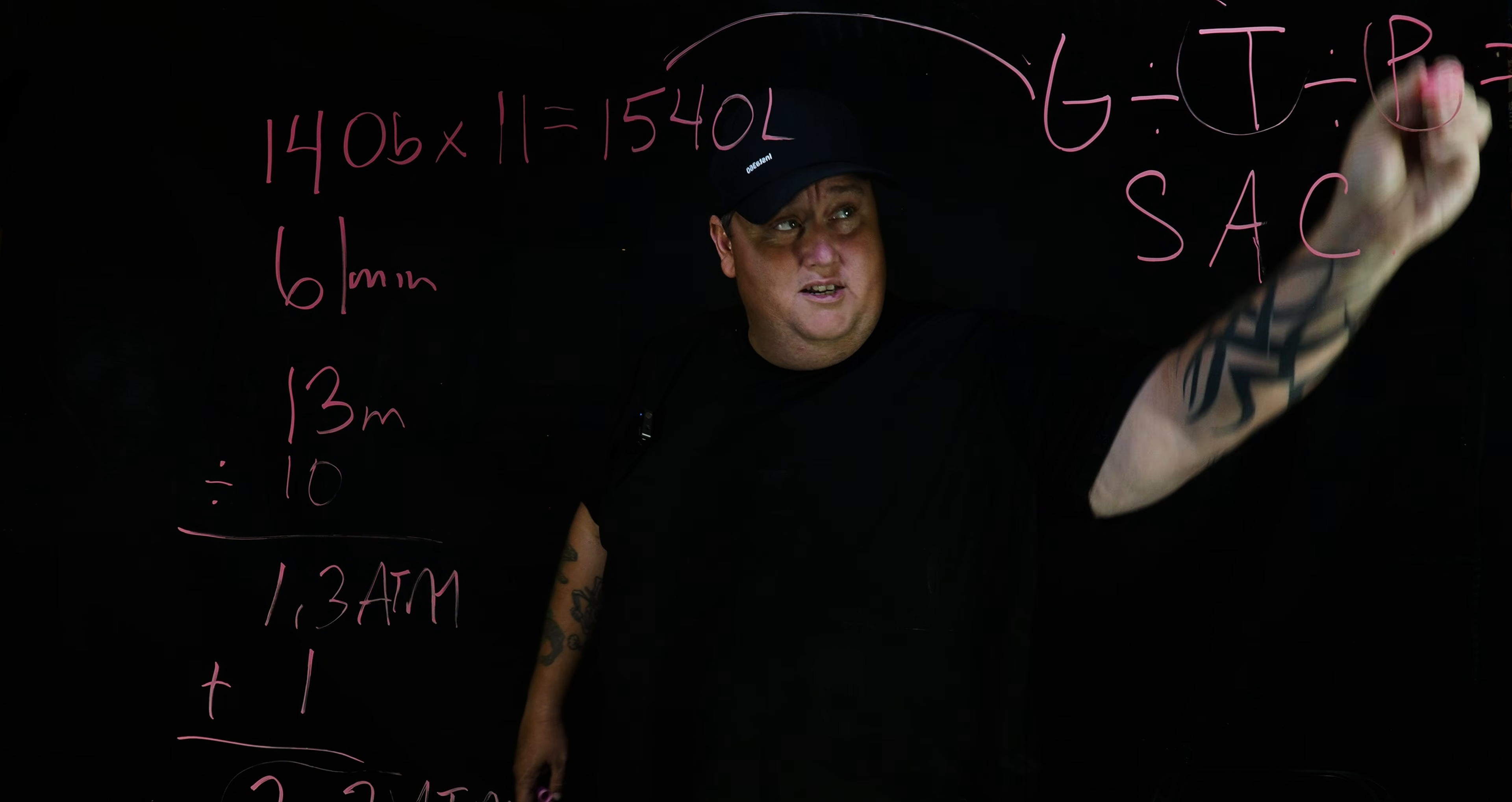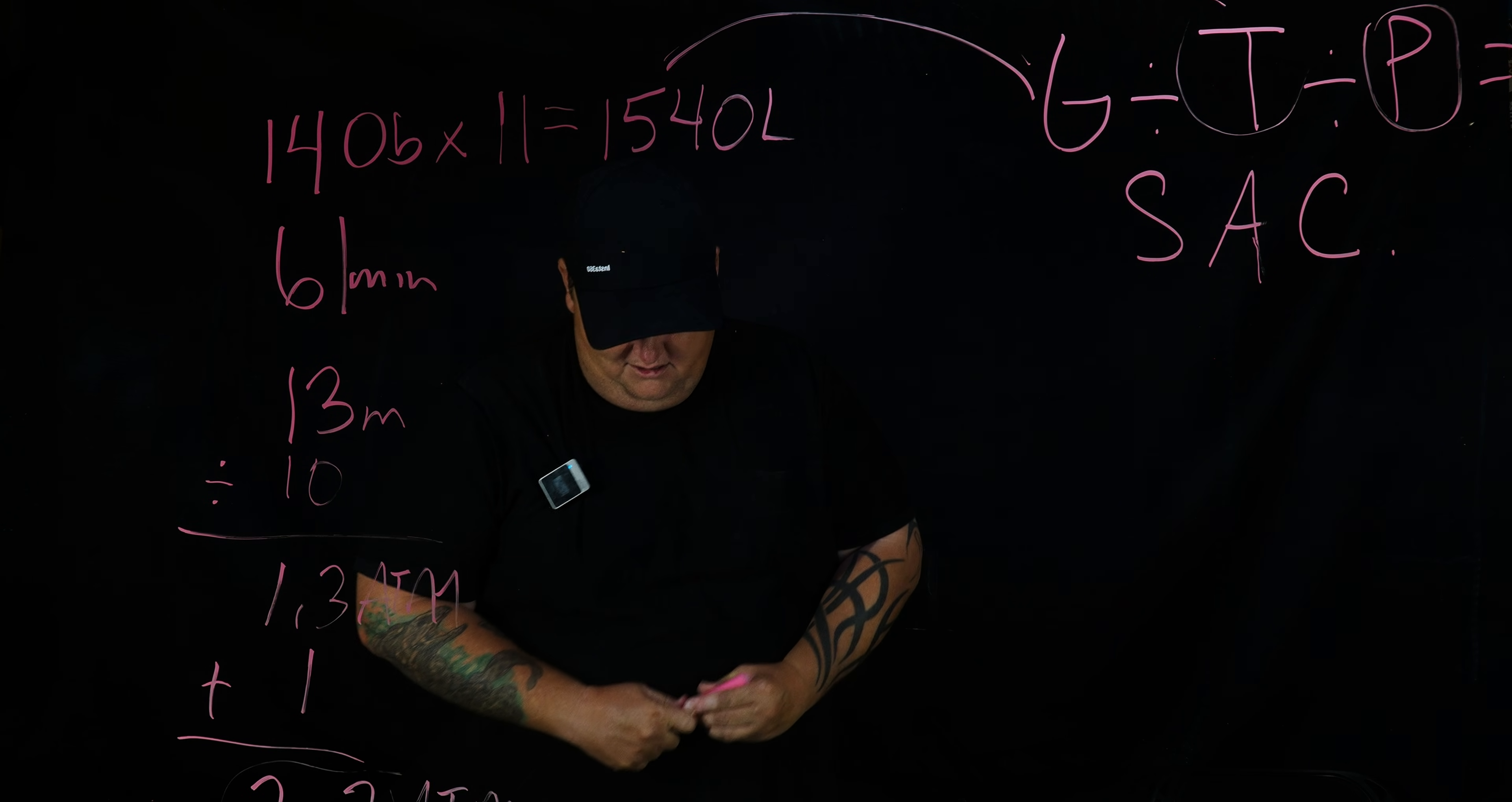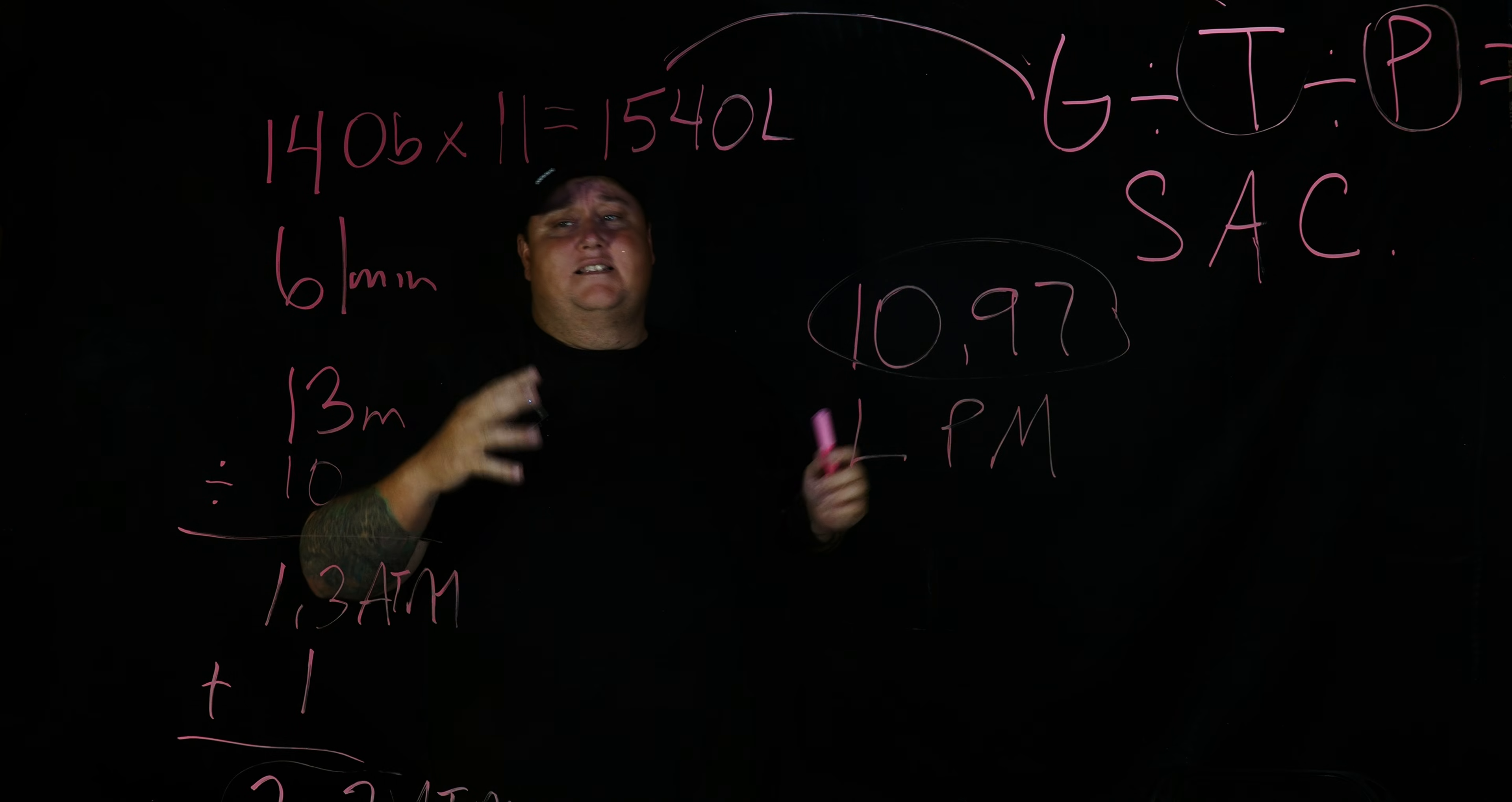So now we have our pressure. All it is now is a simple calculation. I got 1540 divided by 61 divided by 2.3, and that will come out to 10.97 liters per minute.